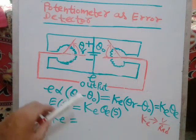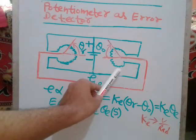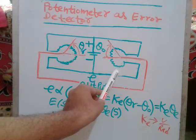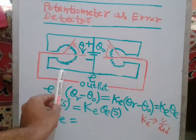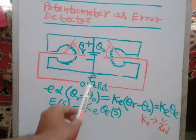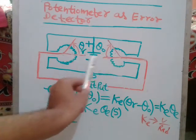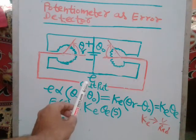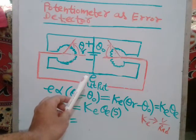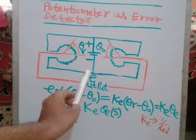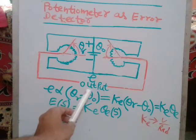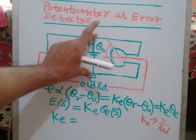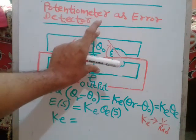But when you rotate the second knob — say in the clockwise direction — while keeping the reference knob fixed, you can see an angular difference develop. This angular difference is converted into a potential difference appearing across the multimeter, which can be measured.